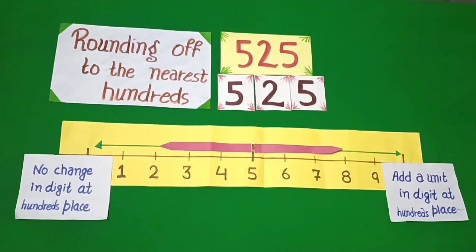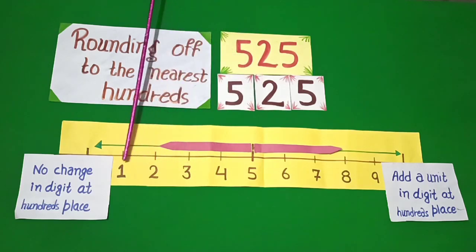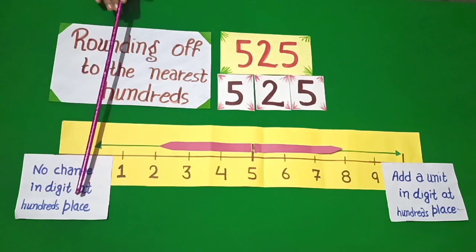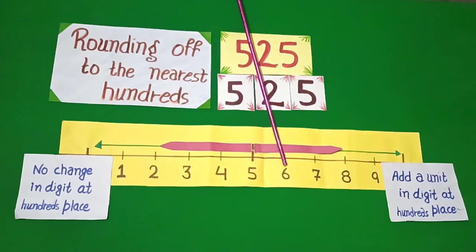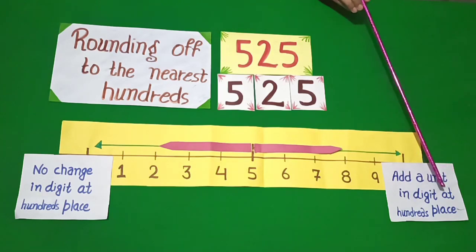Students, when we do rounding off to the nearest 100s, we look at the digit at the 10th place. If the digit is 4, 3, 2, or 1 at the 10th place, there is no change in the digit at the 100th place. If the digit is 5, 6, 7, 8, or 9 at the 10th place, add a unit to the digit at the 100th place.